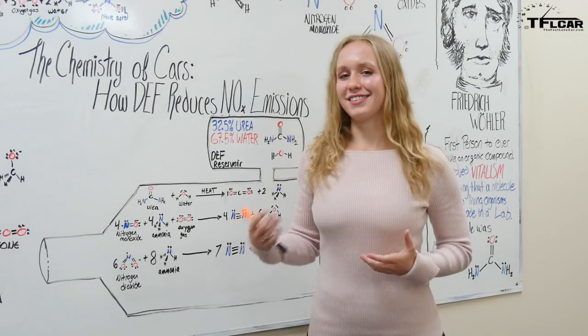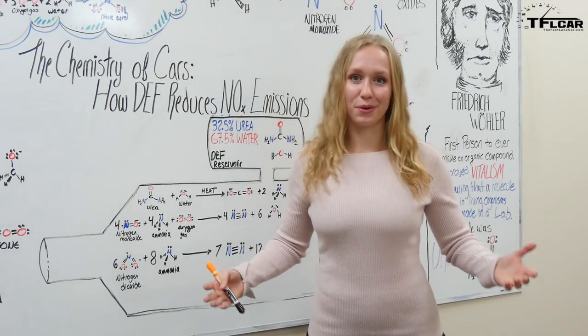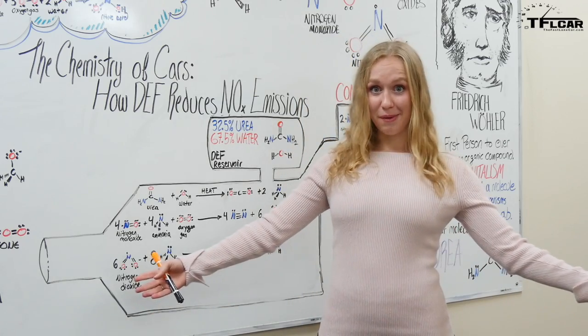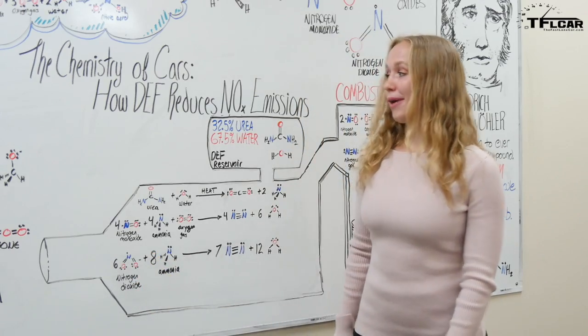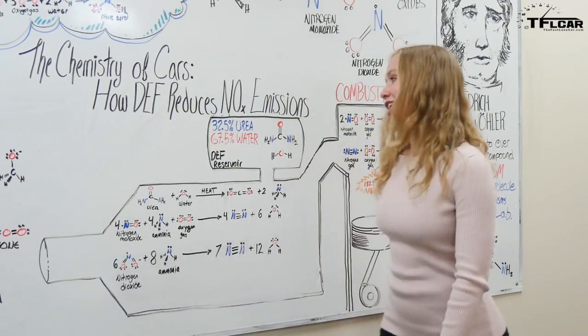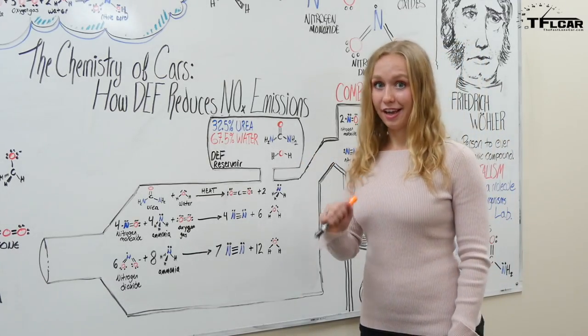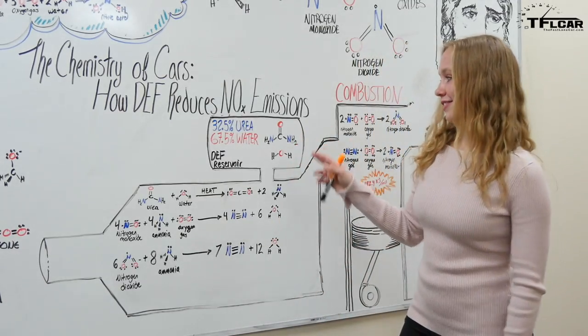So now that we've kind of talked a little bit about why it's important to reduce NOx emissions, how do we go about doing that in a diesel system? Well, you go about it with DEF, which is 32.5% urea and 65.7% water.